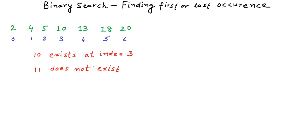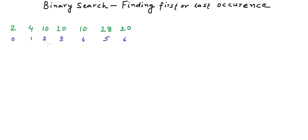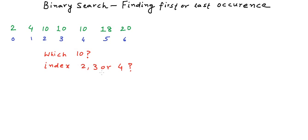Now I will modify this array. This array is still sorted, but the only difference is that we have three occurrences of number 10 in the array. If we want to search for the number 10 using binary search, what index of 10 should we return? We could return index 2, index 3, or index 4.